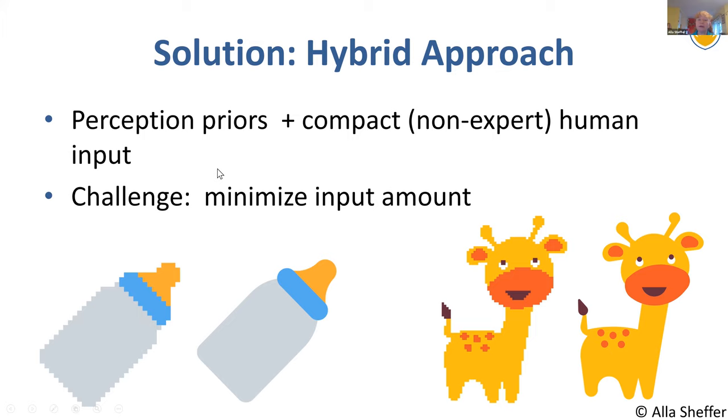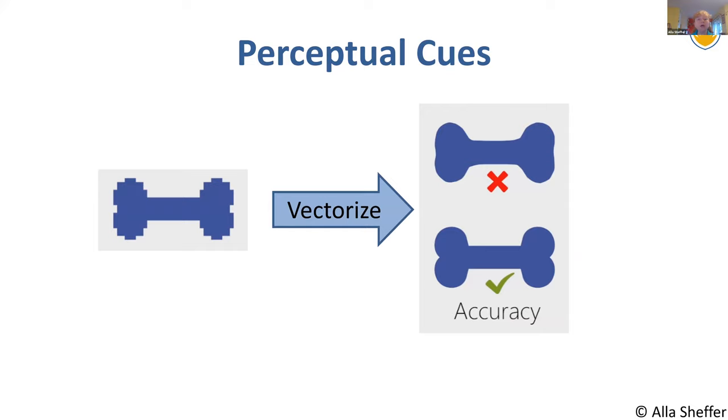So the idea being, we want to have as much leverage as possible of perception priors, because we do know a lot of stuff about how humans perceive. And then to combine those priors with human data, ideally non-expert data. Why? Because expert time is more expensive. And we want to minimize the amount of human data that we need.